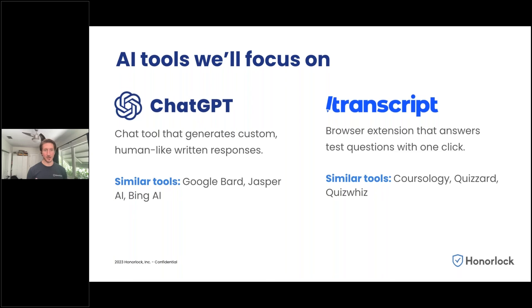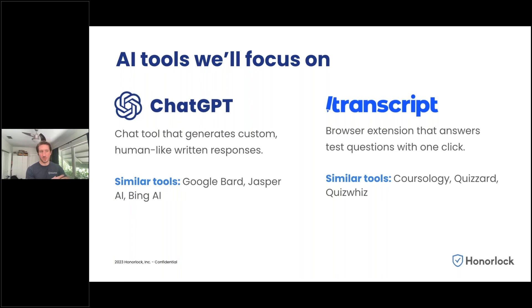We consistently analyze data around which new extensions are popping up. Sure, we're going to shut down Transcript, Coursology, and others — but there's no stopping the next one from coming up. As students install new extensions, we track them, report on them, and when we see a new one gaining steam, we go through a review process to analyze its purpose. If it should not be allowed during a test, we immediately add it to our blocked list. We are staying ahead of the curve to continue blocking what's coming down the pipe.